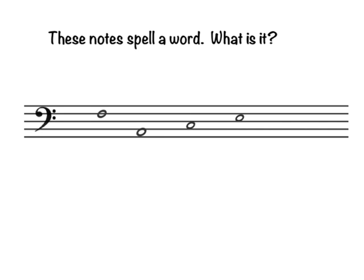These notes spell a word — what is it? This note is on a line: Good Boys Do Fine — F. This note is in a space: All — A. This note is also in a space: All Cows — C. This note is also in a space: All Cows Eat — E. This spells FACE.